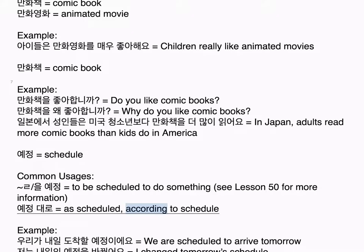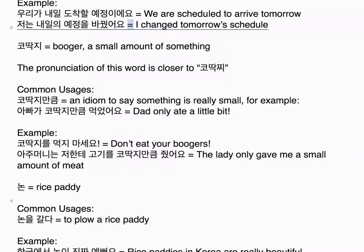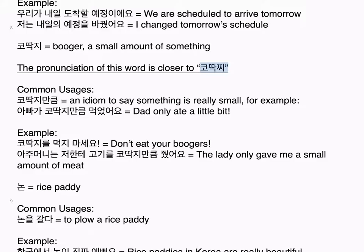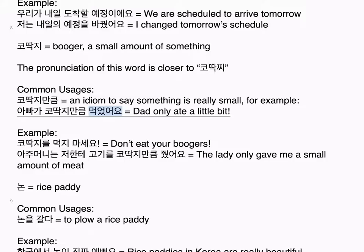예정 equals schedule. Common usages: 을/를 예정 — to be scheduled to do something (see lesson 50 for more information); 예정대로 — as scheduled, according to schedule. Examples: 우리가 내일 도착할 예정이에요 — we are scheduled to arrive tomorrow. 저는 내일의 예정을 바꿨어요 — I changed tomorrow's schedule.